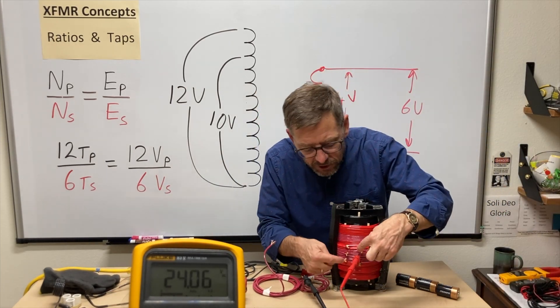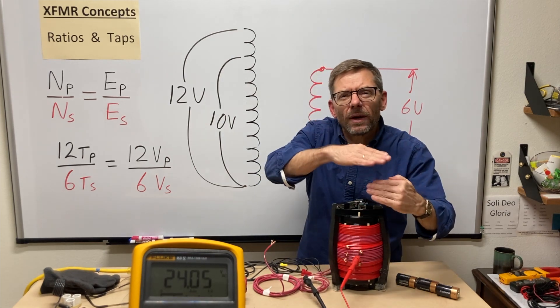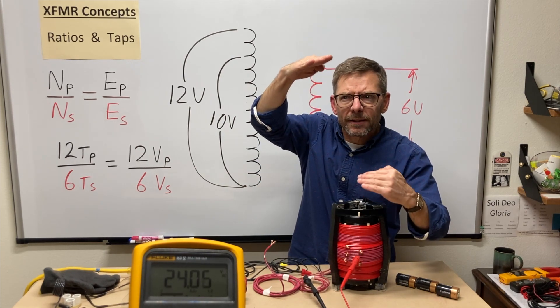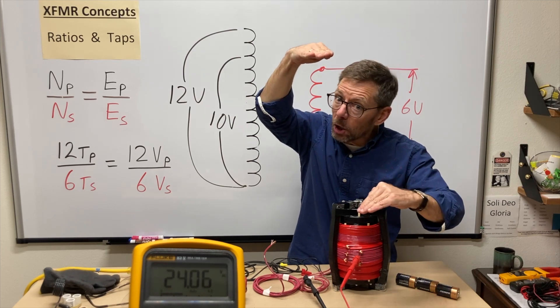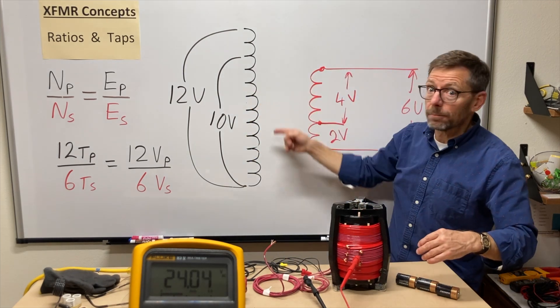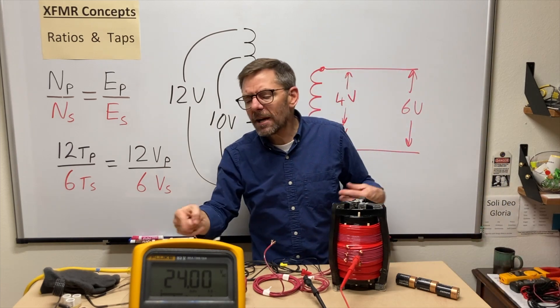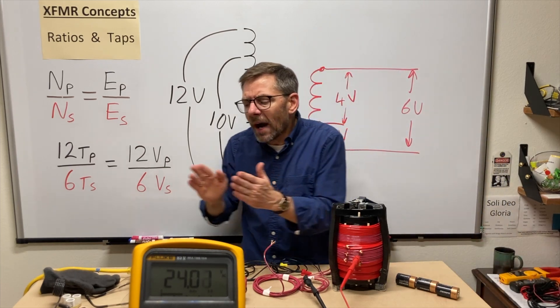But let's say I've got two taps. One of them is like 23 and three quarters. One is 24 and a quarter. Do I go a little high? Do I go a little low? You're not often going to get it perfect.